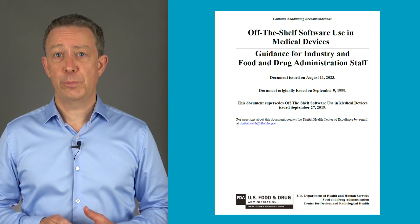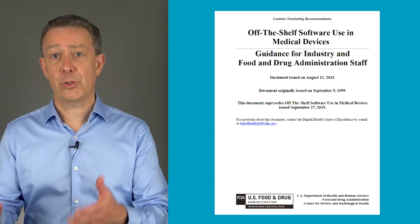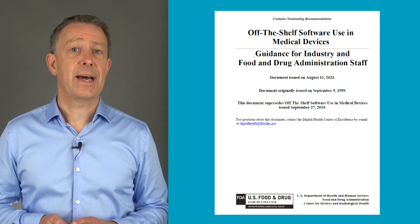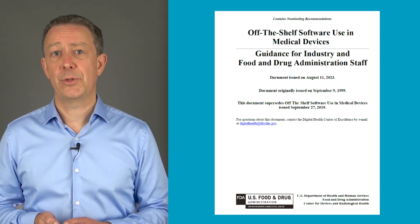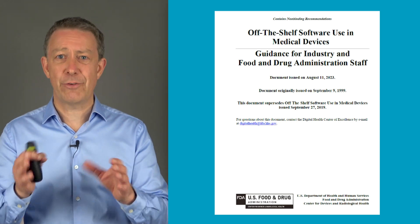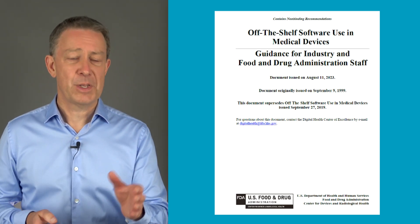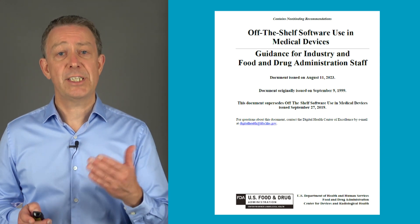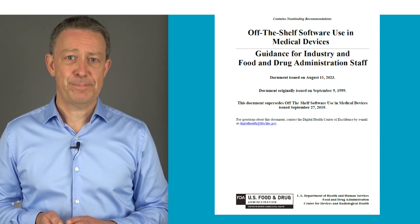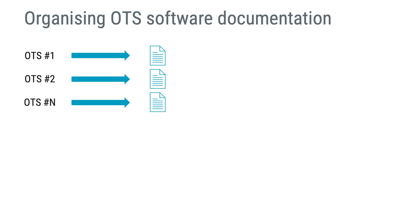The use of SOUP software shall be documented, and as already mentioned before, the FDA guidance for OTS software and SOUP requirements found in IEC 62304 are phrased slightly differently but close enough. For this video I will reference the FDA OTS software guidance when explaining documentation requirements. The guidance can give you the impression that you must create a single document for each software used, but I encourage you to find a pragmatic approach to make the requested information maintainable.